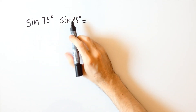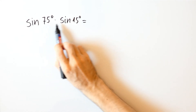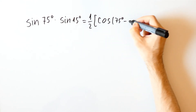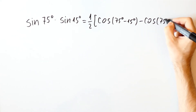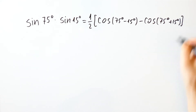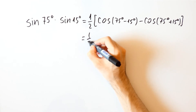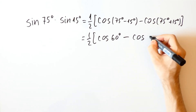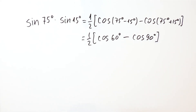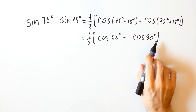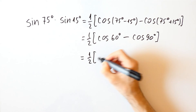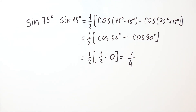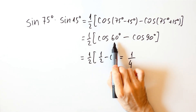If we go back to our initial problem and use the formula we just obtained, we get that the sine of 75 degrees times the sine of 15 degrees is equal to one half of the cosine of 75 degrees minus 15 degrees minus the cosine of 75 degrees plus 15 degrees. That is equal to one half of the cosine of 60 degrees minus the cosine of 90 degrees, which is one half of one half minus zero, equal to one over four. Note that this way we only need to know the cosine of 60 degrees and the cosine of 90 degrees.